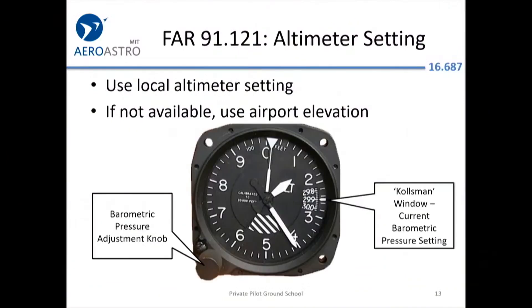We already talked about altimeter settings. Instead of the standard 29.92, you may need to adjust your altimeter to the local setting. You can dial in the ATIS frequency and it announces the weather and the altimeter setting for that area. When air traffic control hands you off from one controller to another, one of the first things they'll tell you is the altimeter setting so that everybody knows what altitude they're at.